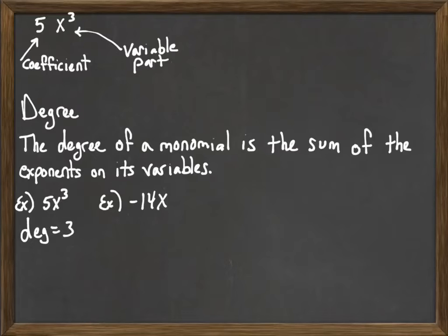As another example, consider the monomial negative 14x. Remember, when we have a single variable, and it doesn't have an exponent on it, the exponent is 1. So the degree of negative 14x is actually just 1.